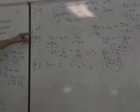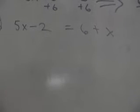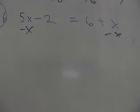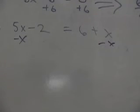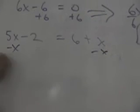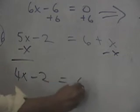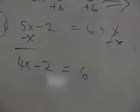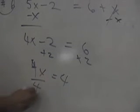5x minus 2 equals 6 plus x, and all these are on page 137, by the way. Which rock do we want to move? 5x or x? Let's move the little rock. What do we get? 5x minus x. 4x. Okay, write it down. What do we do next? Plus 2. And we get 4x equals 8, and we're almost done.